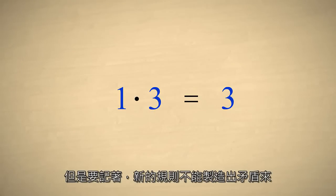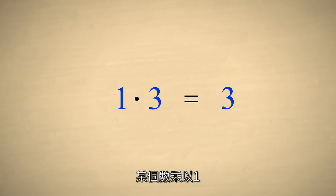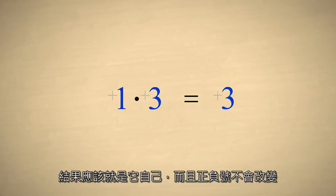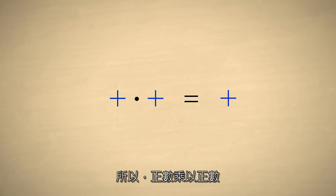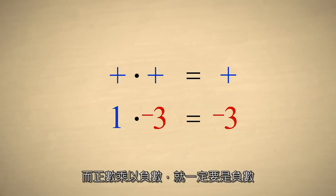The rules of multiplication were picked so as to keep everything consistent. For instance, since one is the multiplicative identity, if a number is multiplied by one, we should expect that the number's value and sign will not change. Therefore, multiplying a positive number times a positive number must produce a positive result, and multiplying a positive number times a negative number must produce a negative result.